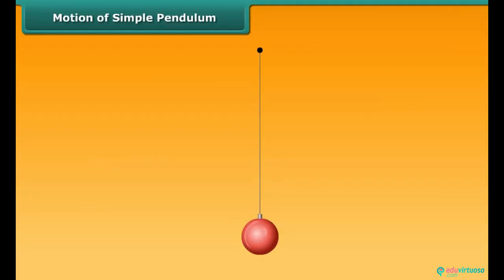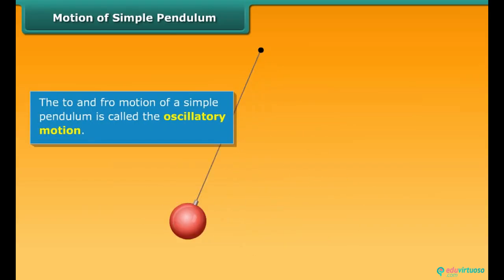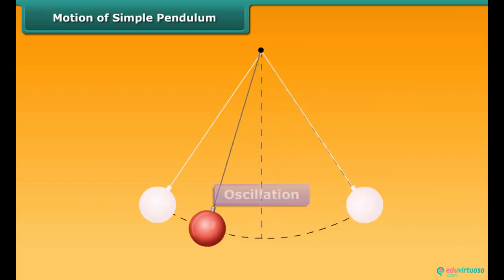Suppose the bob of a simple pendulum is in equilibrium. If we now take it to one side, left or right, and release it, it begins to move to and fro. This to and fro motion of a simple pendulum is called the oscillatory motion. One full to and fro motion of the pendulum is called an oscillation.